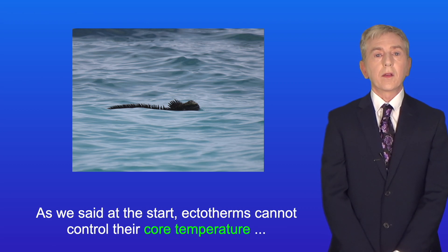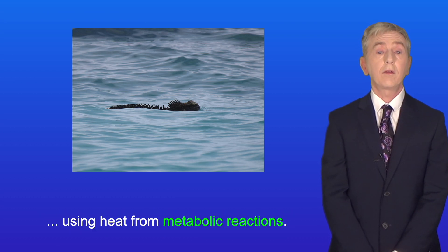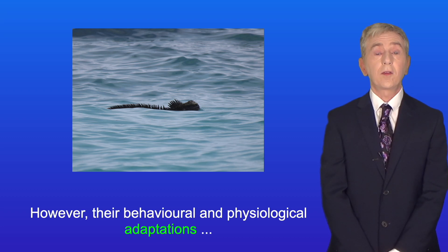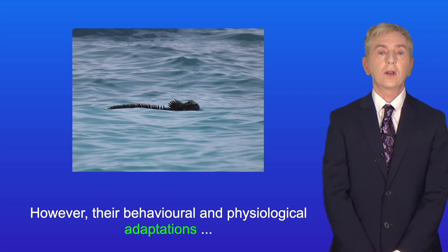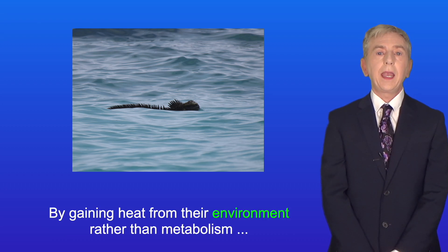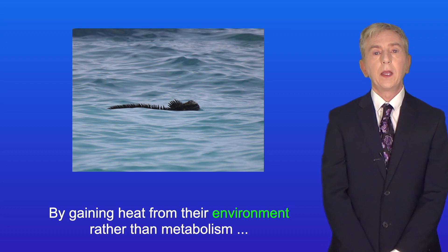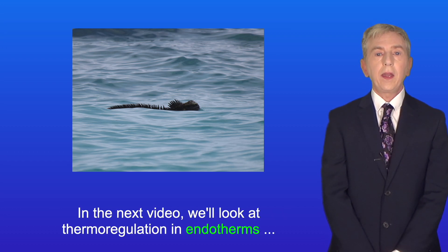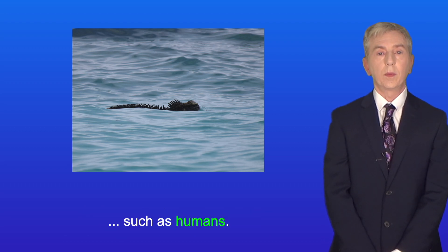As we said at the start, ectotherms cannot control their core temperature using heat from metabolic reactions. However, their behavioral and physiological adaptations help ectotherms to keep their core temperature within an acceptable range. And by gaining heat from their environment rather than metabolism, ectotherms can survive on limited food. In the next video, we look at thermoregulation in endotherms such as humans.